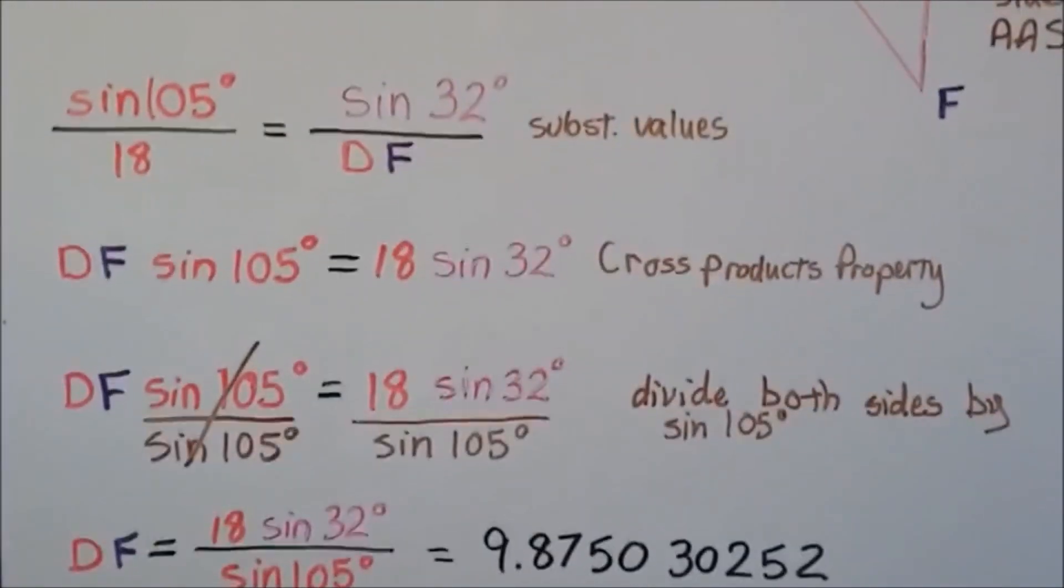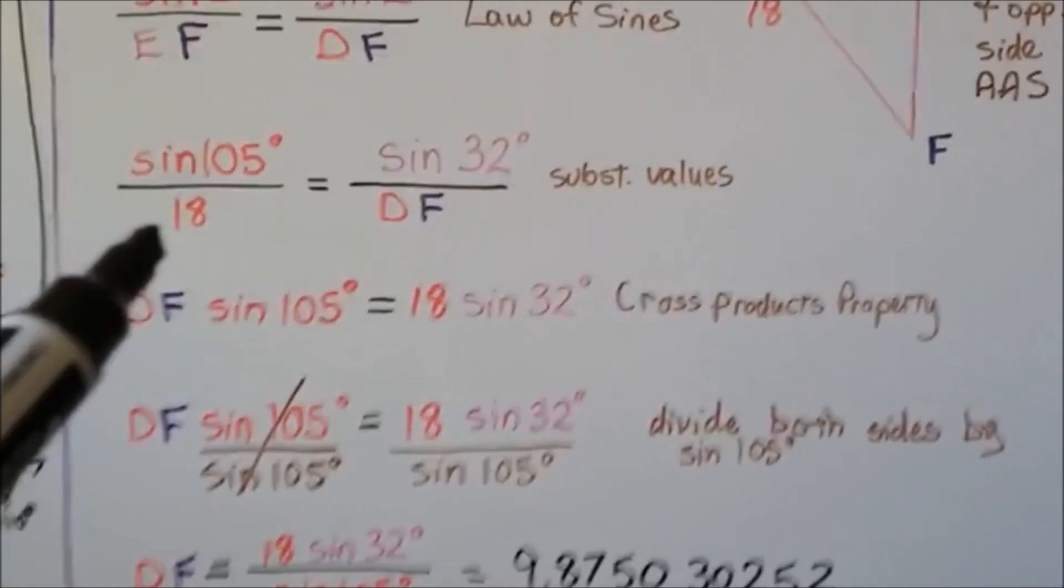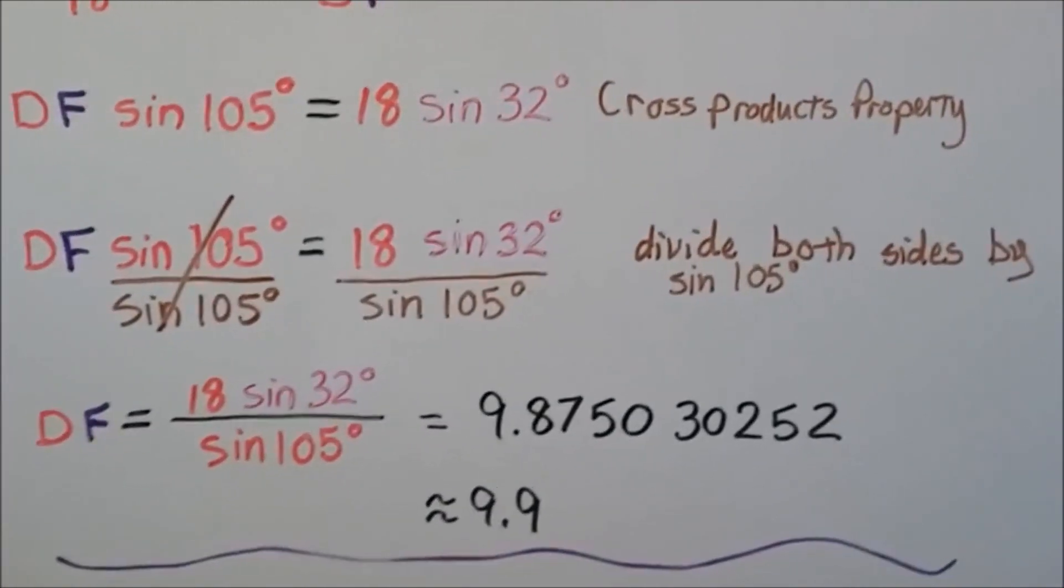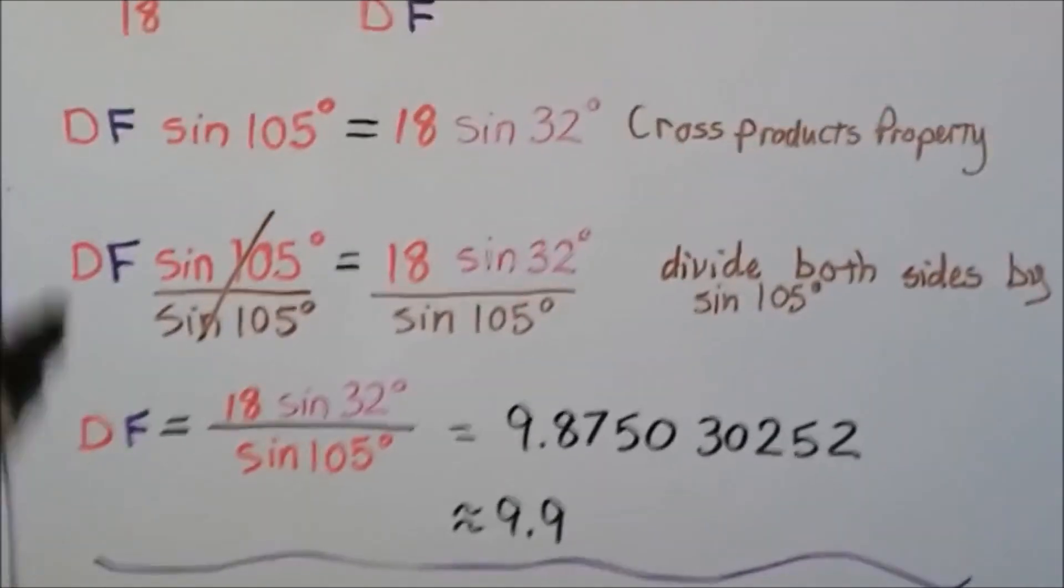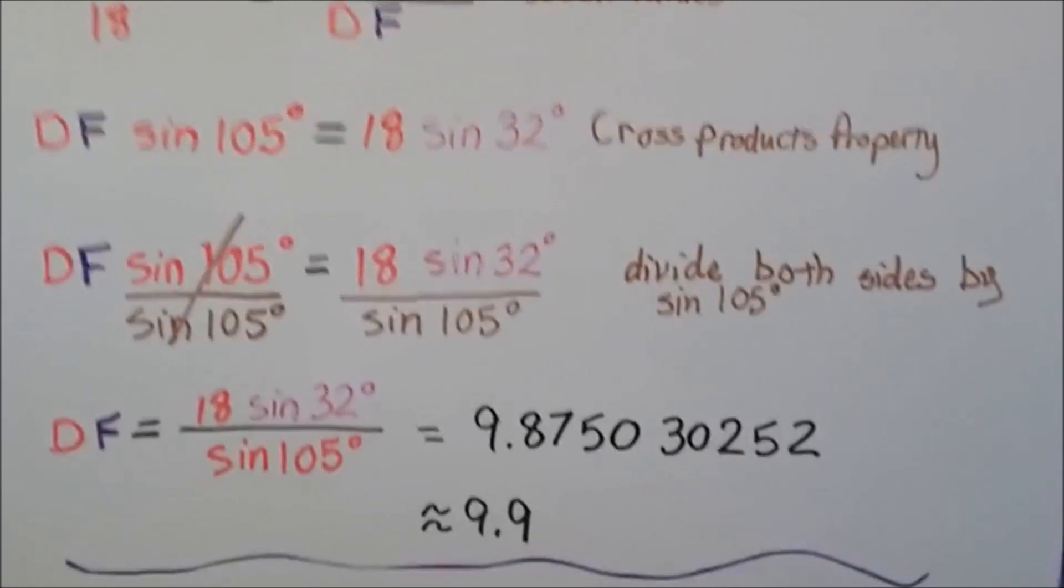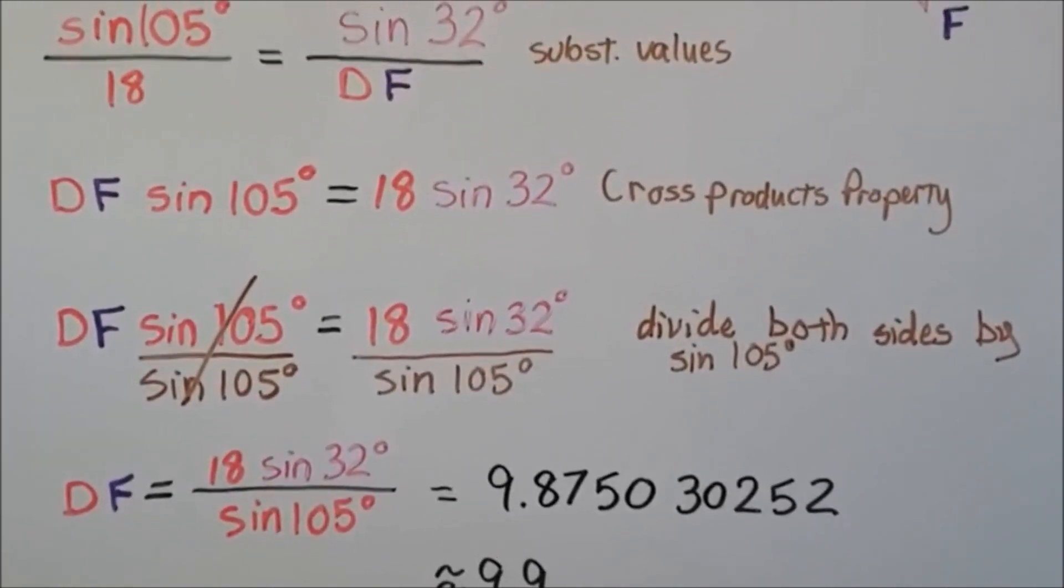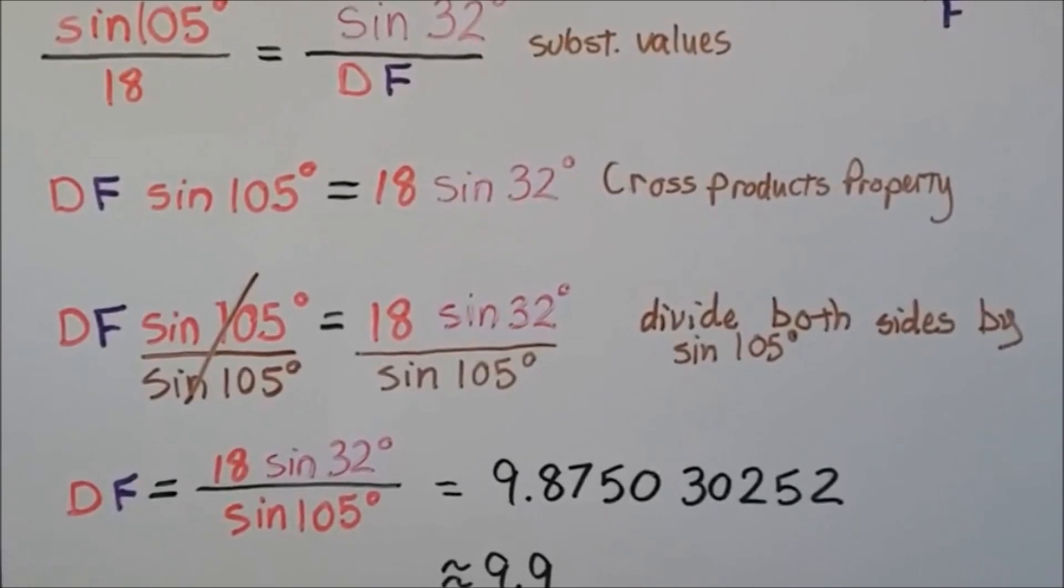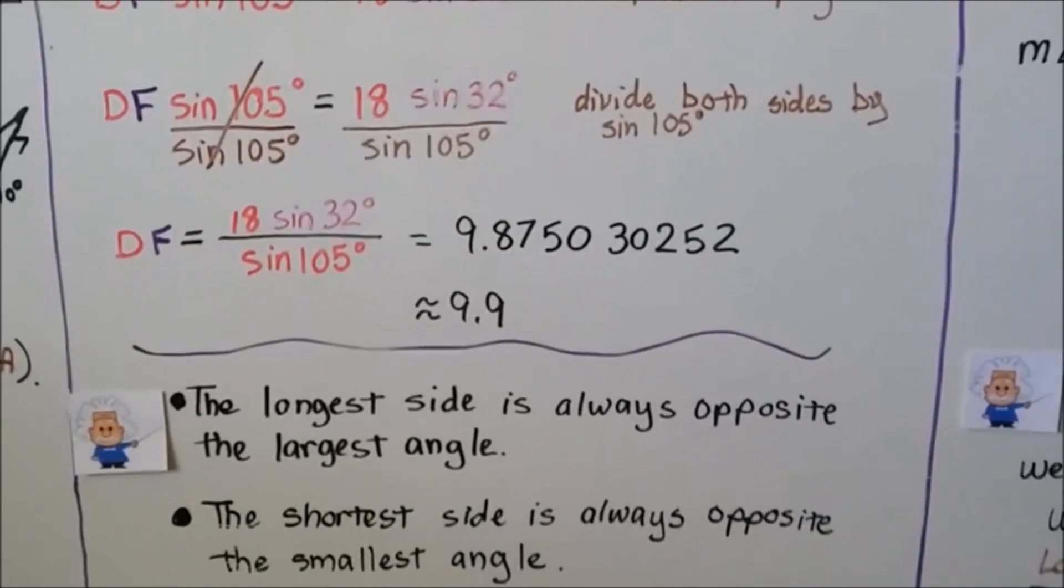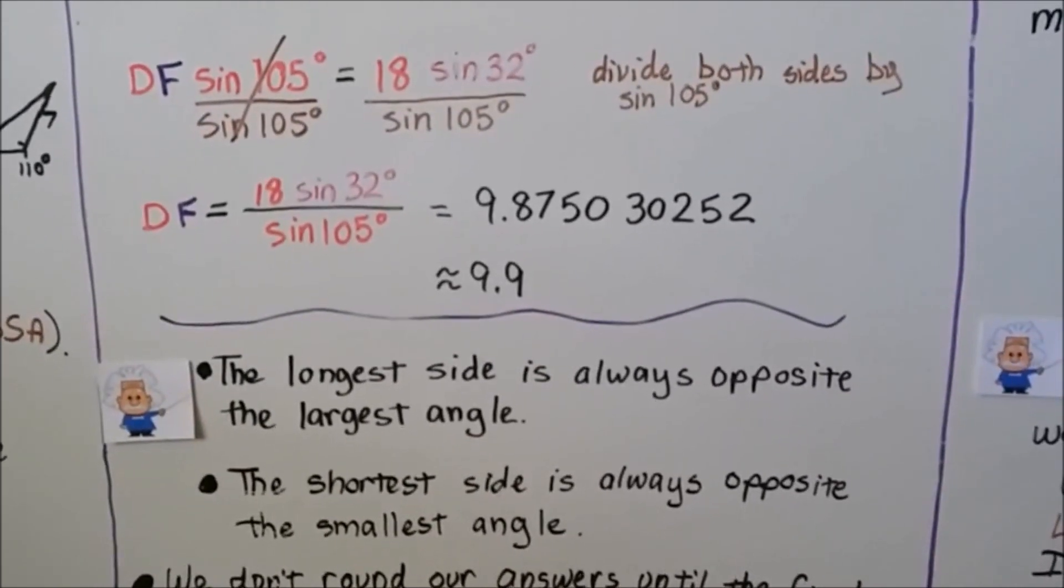Using the cross-products property, we can do DF times sine of 105 degrees equals 18 times the sine of 32 degrees. We can divide both sides by the sine of 105 degrees. We're left with DF equals the quotient of 18 sine of 32 degrees over sine of 105 degrees. We do it on our calculator. We get this decimal that we can round to the nearest tenth as approximately 9.9. Remember, the longest side is always opposite the largest angle, and the shortest side is always opposite the smallest angle. We don't round our answers until the final step of the computation so that we'll be more accurate.